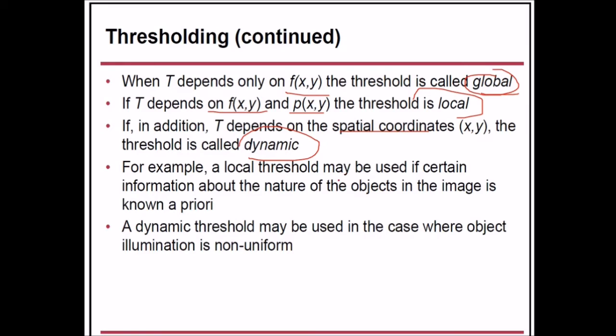For example, a local threshold may be used if certain information about the nature of the objects in the image is known a priori. While a dynamic threshold may be used in cases where the object illumination is somewhat non-uniform.